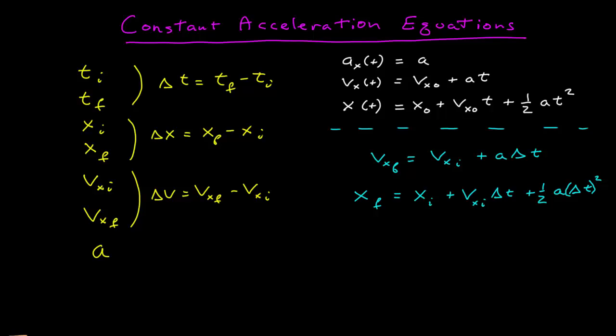All right, so in part one, we used the constant acceleration functions of time to help derive two relationships that connected the position and velocity at two specific points in time, t-final and t-initial. For the most part, that's all the information.